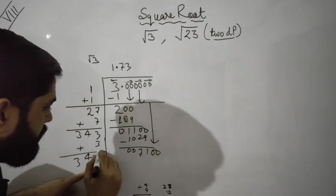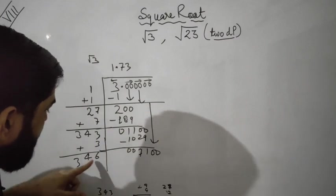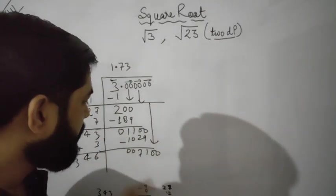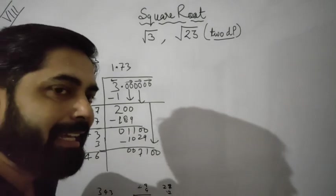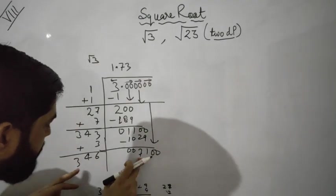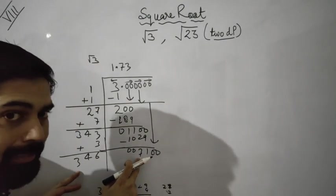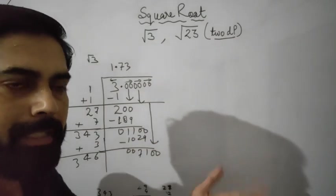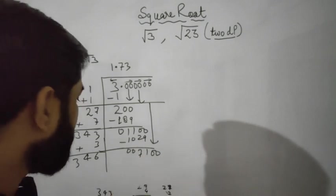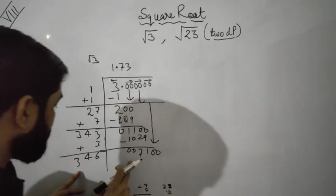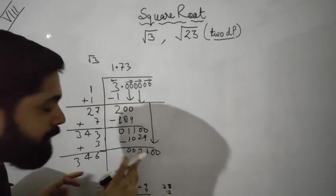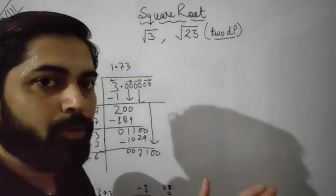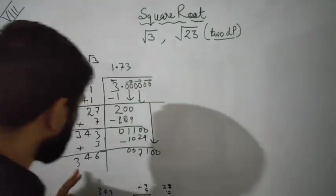Here we have 346. Again we find the next digit by trial and error method, comparing numbers the same way as in long division. We try 2: 3462 times 2 gives a result. 3 times 3 is 9, which is more than 7, so we try 2.